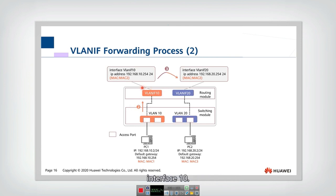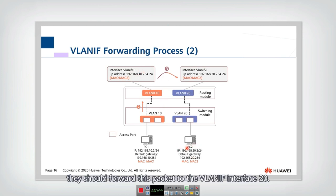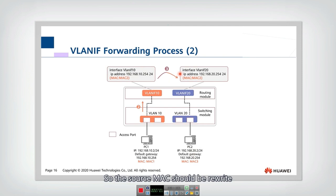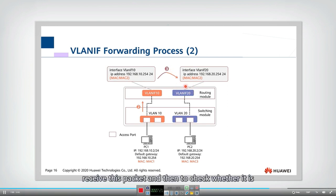When VLAN interface 10 receives this packet, it checks the destination MAC address and finds that it matches itself, so it accepts the packet. Then it checks the destination IP address and finds that it should forward this packet to VLAN interface 20. So it rewrites the source MAC as its own MAC and rewrites the destination MAC as the MAC of the next hop, then sends the packet to VLAN interface 20. VLAN interface 20 receives this packet and checks whether the destination MAC address is for itself — yes, it is.